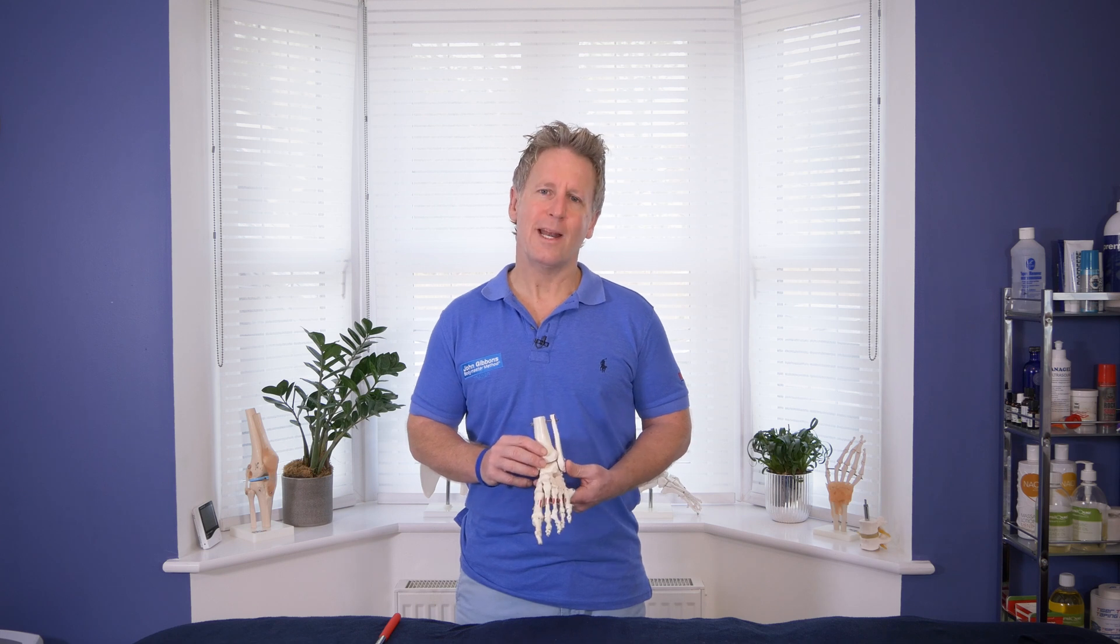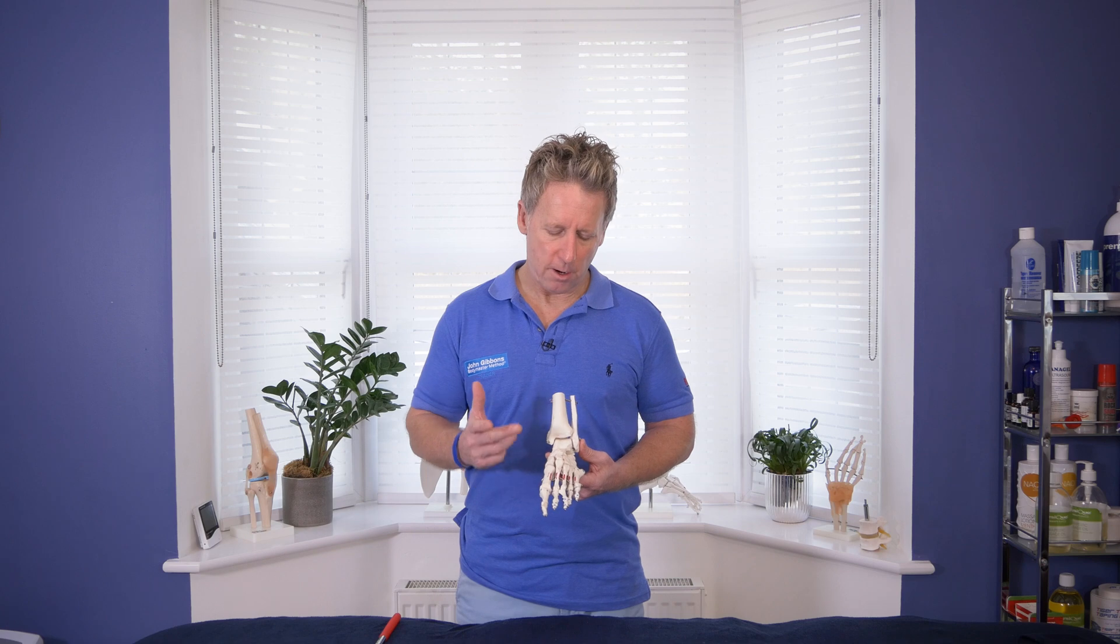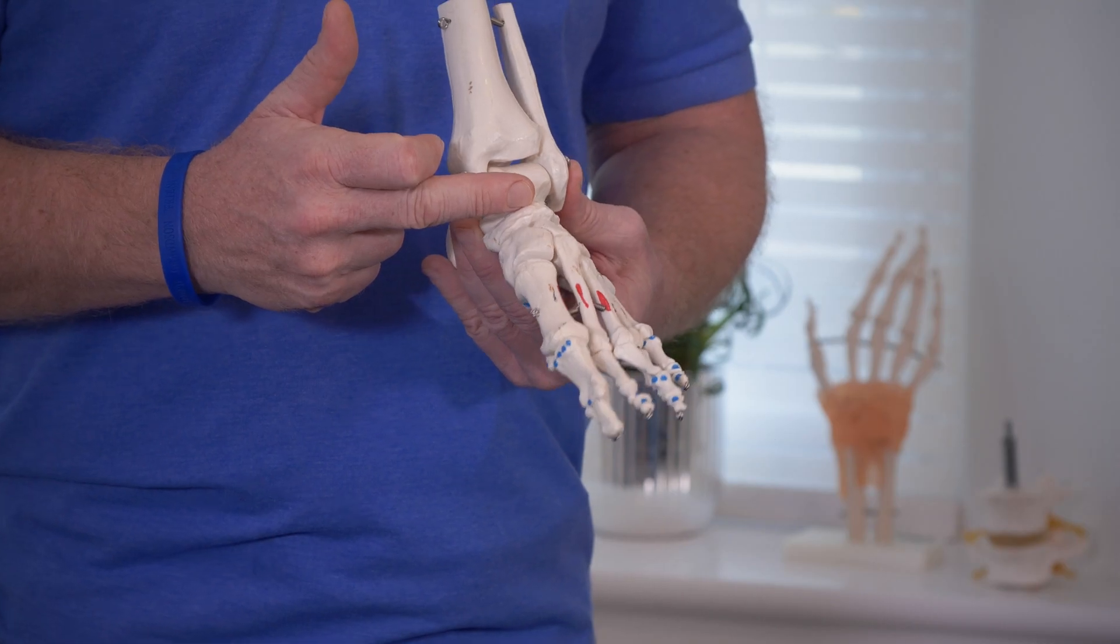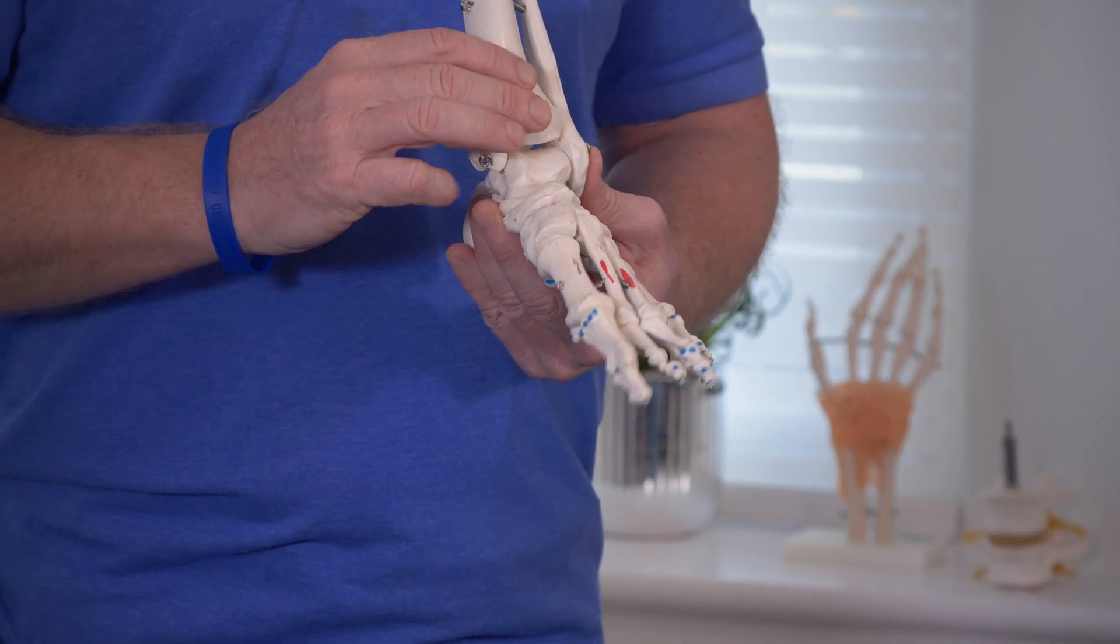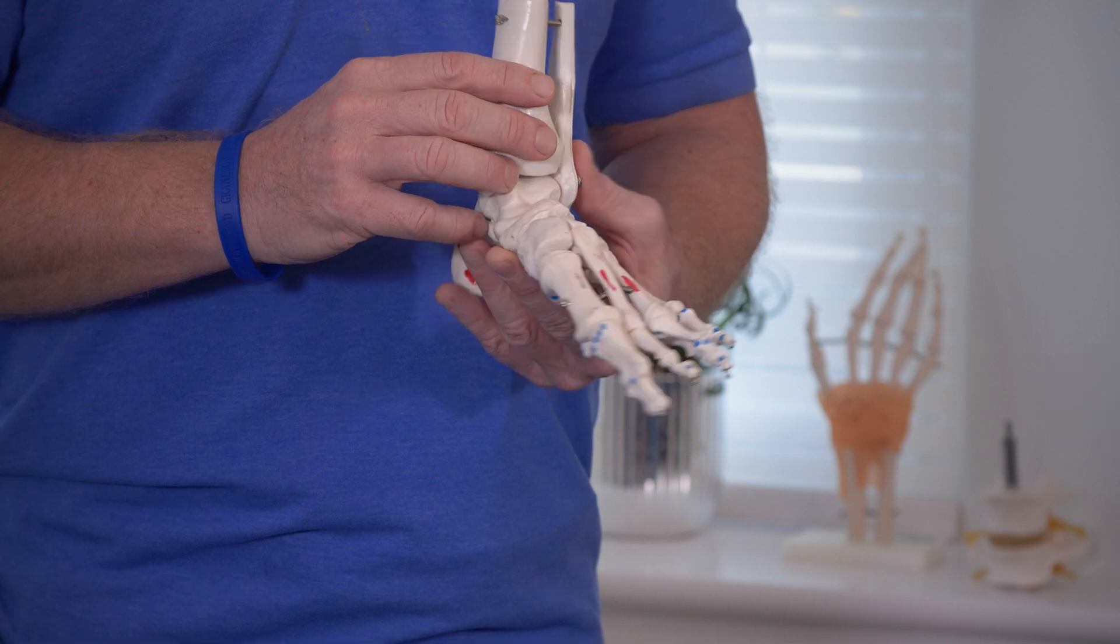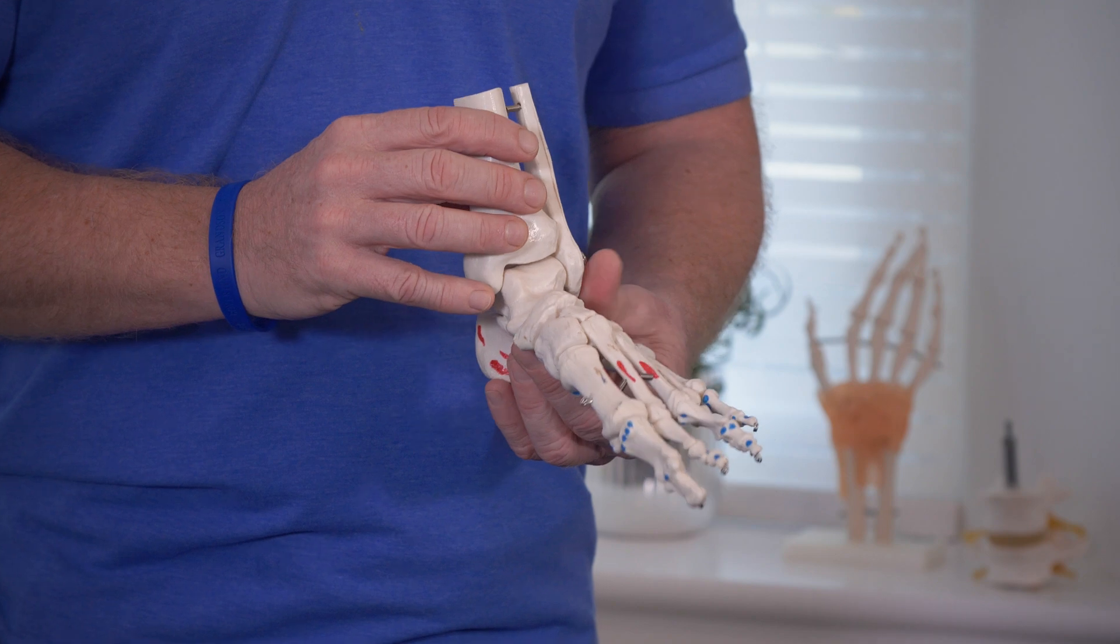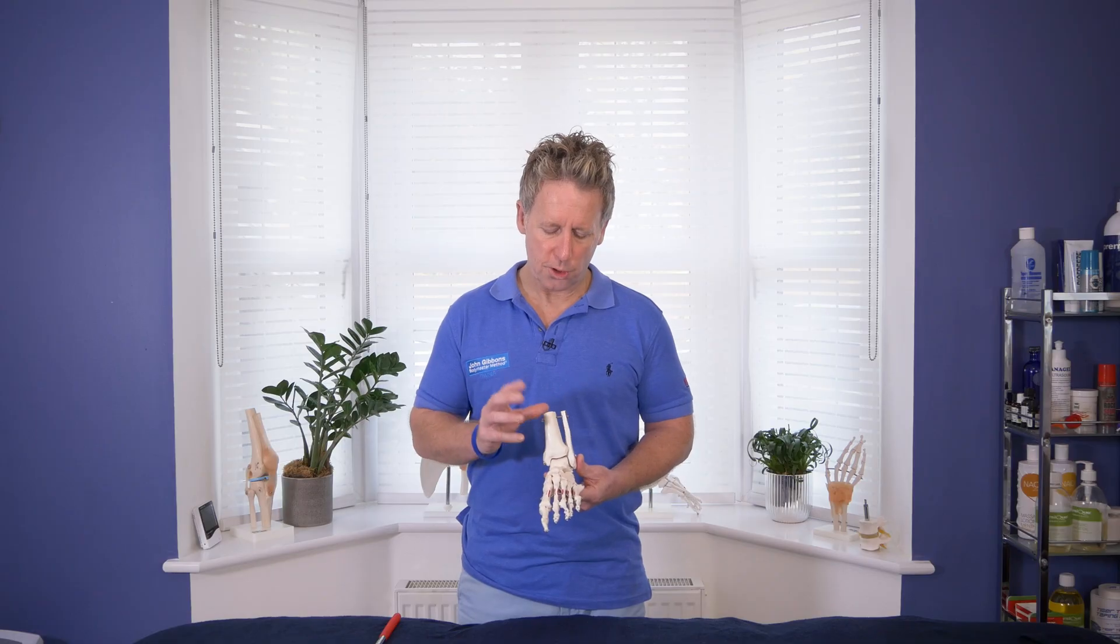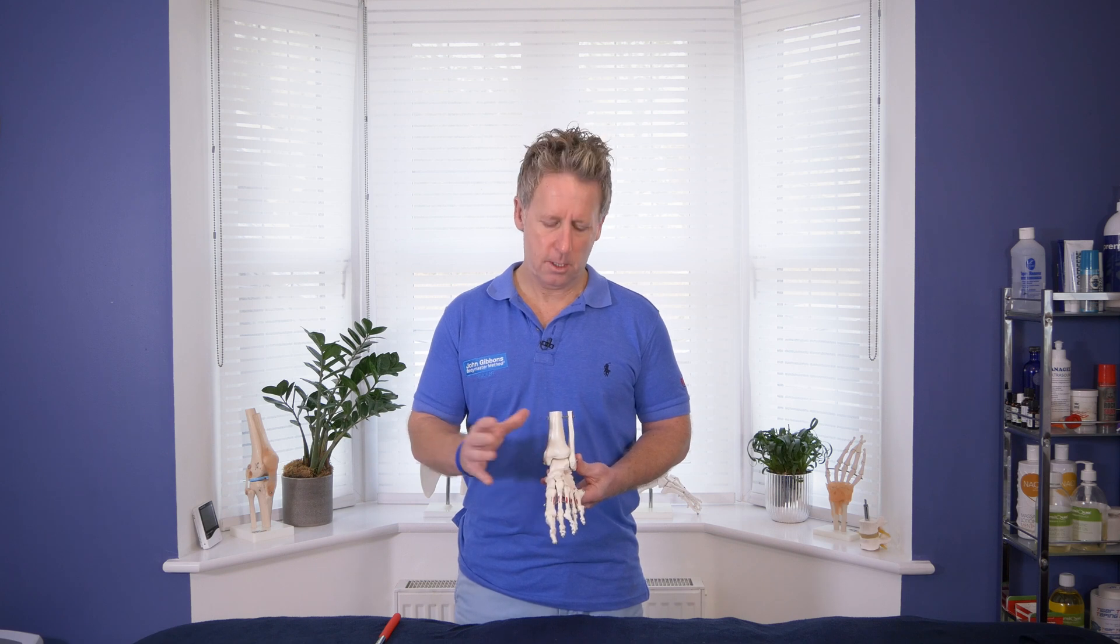There are 28 bones within this region. There are 7 tarsal bones, 5 metatarsals, and 14 individual phalanx bones known as the phalanges. There are also 2 bones underneath known as the sesamoid bones. But you also have to remember that the ankle is made up of the tibia and the fibula.